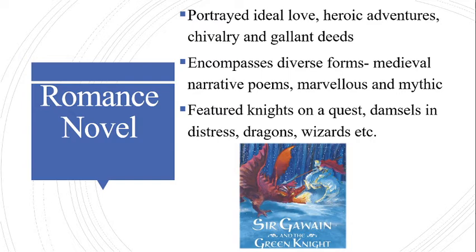A romance novel contains ideal love, adventure, fantasy, heroic adventures, extravagance, the marvelous, and the mythic. It is extremely difficult to define a romance novel as it encompasses diverse forms such as the medieval narrative poems, the gothic novels, and even modern films and Harlequin romances. The term 'romance' loosely suggests a non-didactic narrative that deals with ideal love and heroic and spectacular achievements. An example of a medieval romance popular in the 12th century is Sir Gawain and the Green Knight by an anonymous English author.